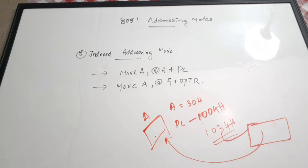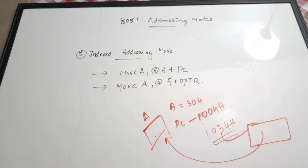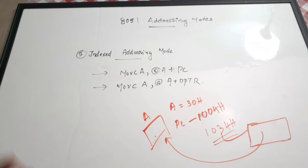These are the five addressing modes that 8051 generally uses. There are some other addressing modes, but the most commonly used and asked ones are these five: immediate, register, direct, register indirect, and indexed addressing mode. You can expect a lot of questions from this area — some instructions will be given and you have to identify which addressing mode it is. I hope you understood the addressing modes. If so, please give a thumbs up, share the video, and subscribe to the channel.